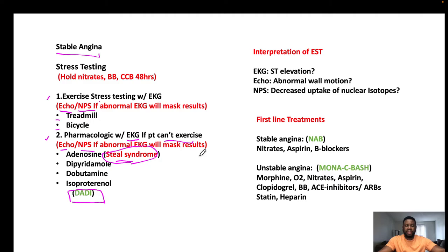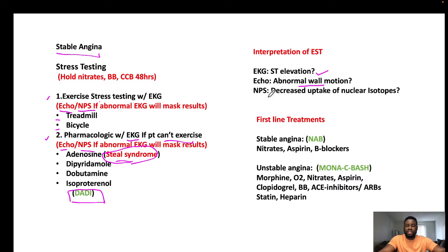To interpret stress test results: if ischemia is induced and the EKG shows ST elevation, the test is positive — the patient is at risk of MI. On echo, a positive result shows abnormal wall motion. On nuclear perfusion scan, a positive result shows decreased uptake of nuclear isotopes.